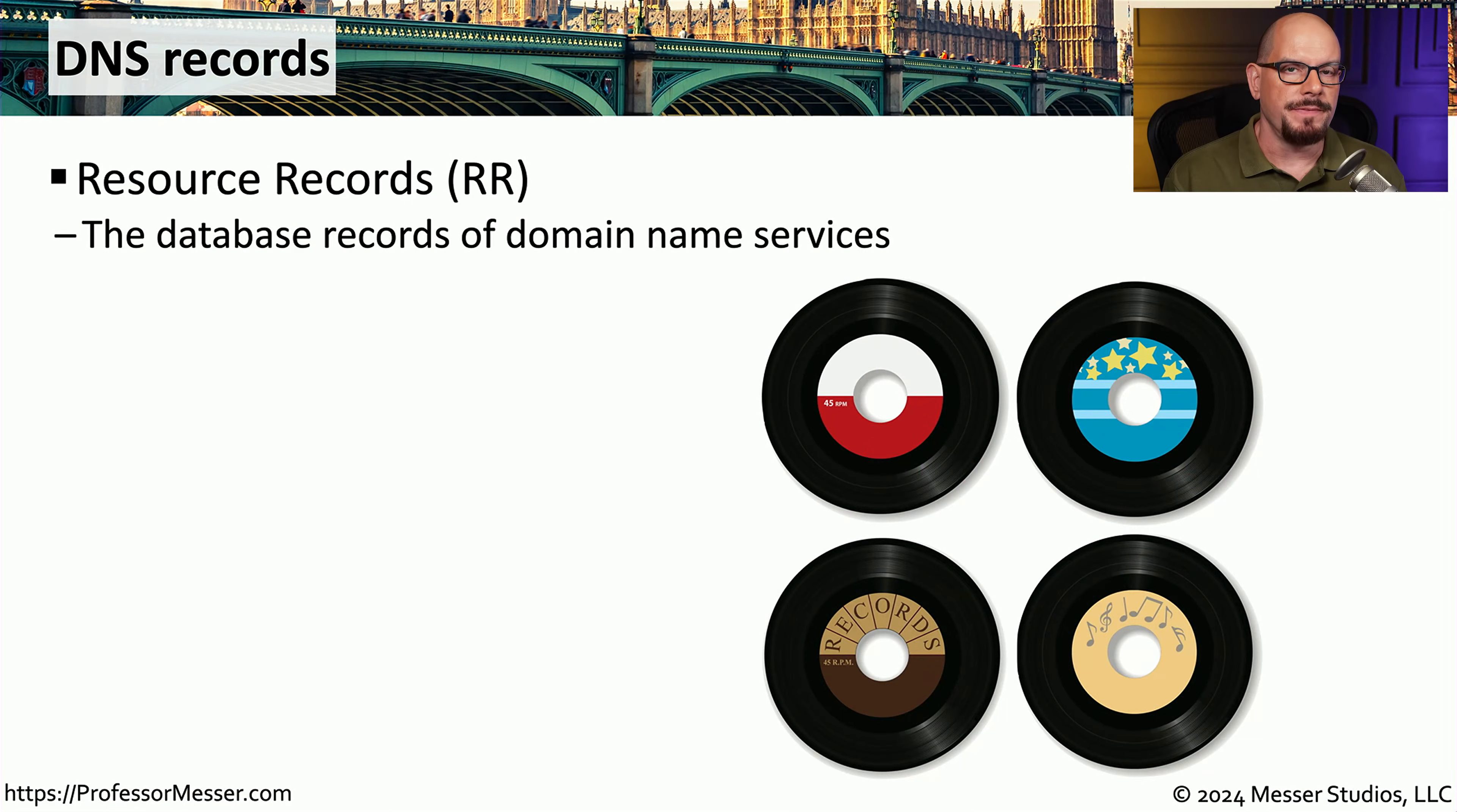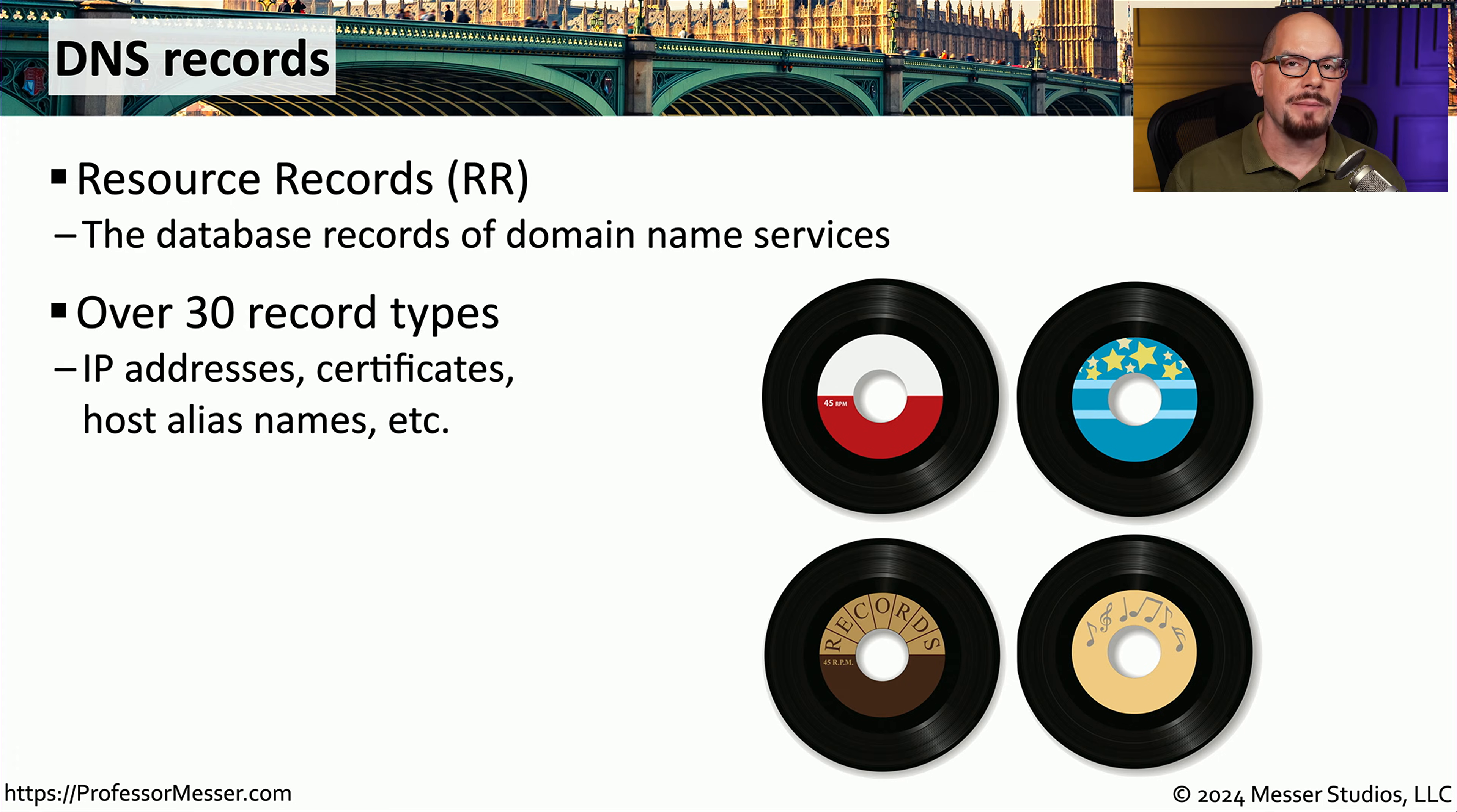If you were to look at the configuration file of a DNS server, you would see a number of different lines, and those lines contain one or more different types of DNS records. We refer to these as resource records, and these resource records might provide information that allows us to resolve a name from an IP address.